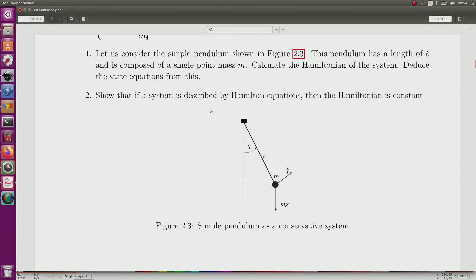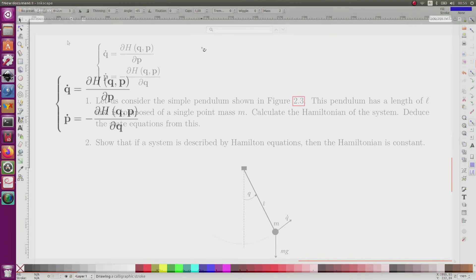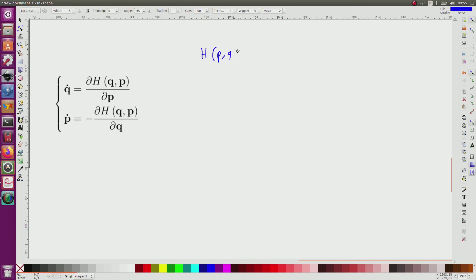In the second question, I have to show that if a system is described by Hamiltonian equations, not only our pendulum but any system described by Hamiltonian equations, then the Hamiltonian is constant. Recall that the Hamiltonian equations are given. I have my Hamiltonian which depends on p and q, and from this I will compute the derivative with respect to t.